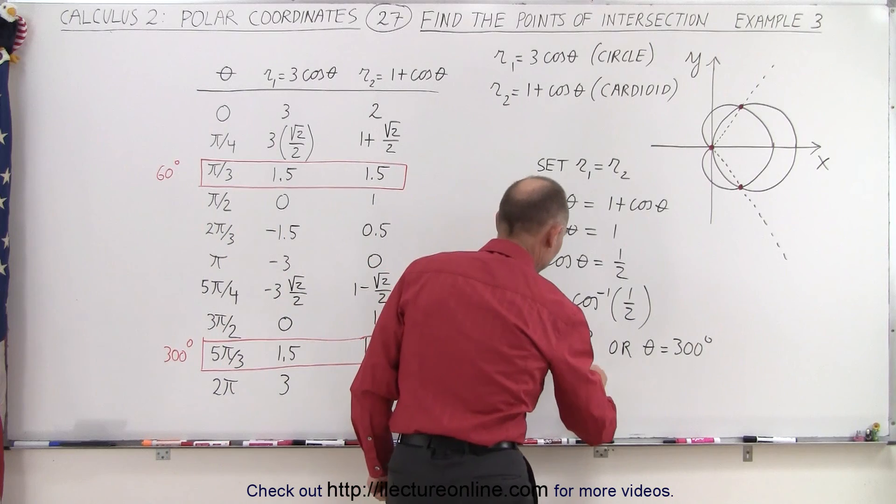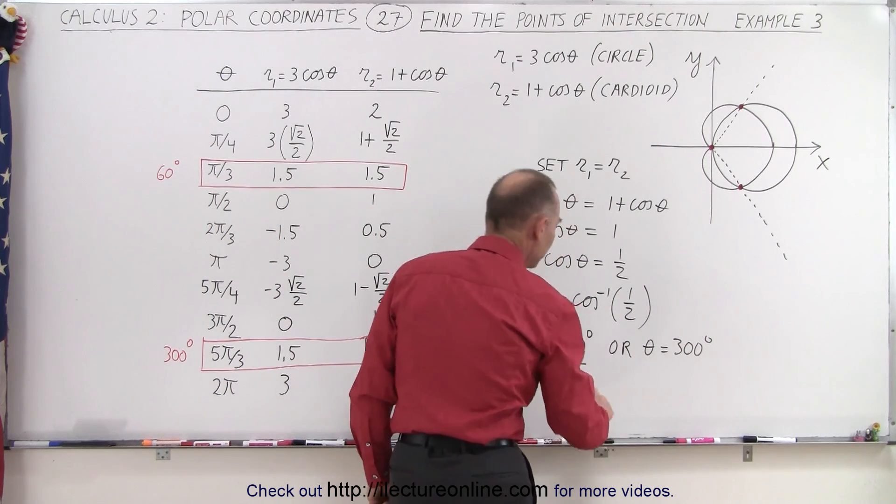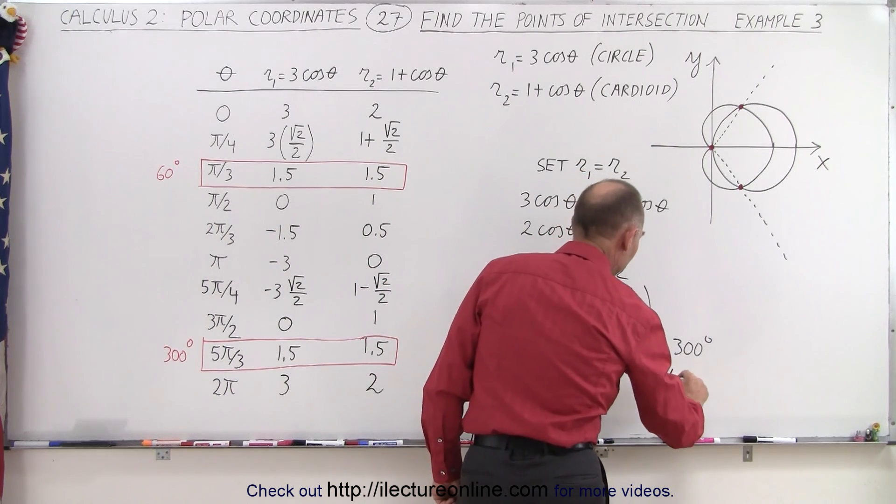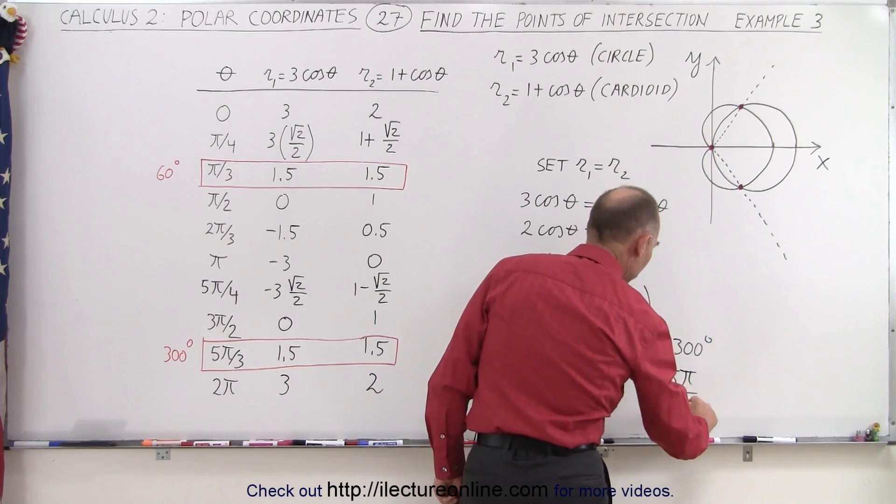Of course, at 60 degrees, that's pi divided by 3. And at 300 degrees, that's 5 pi divided by 3.